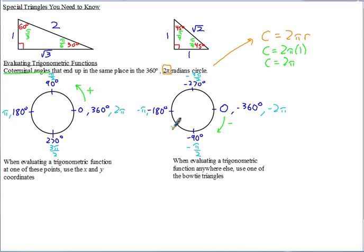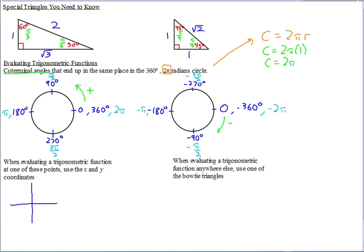Keep that in mind when evaluating trig functions or solving trig equations. The traditional unit circle is easiest to use when evaluating a trig function at one of the four axis points. Just draw the circle with radius one. At each of the four axis points, the coordinates tell you the trig function values directly.